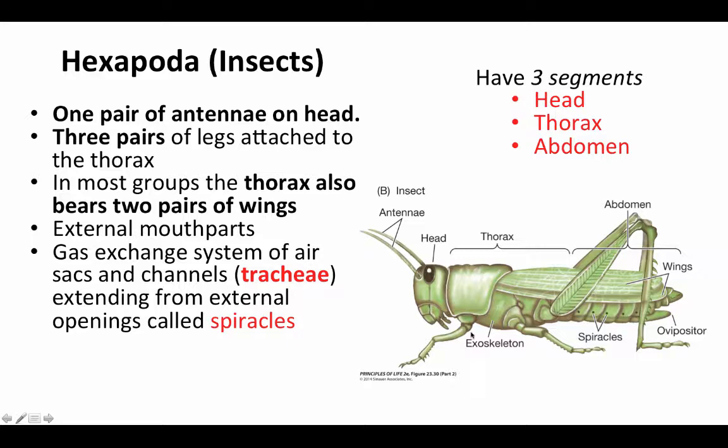The antennae are modified appendages, serially homologous with the legs. In most groups, the thorax bears two pairs of wings — this is the ancestral condition. Insects have external mouthparts, which are also highly modified serially homologous versions of these appendages. Their gas exchange happens through a system of air sacs and channels called tracheae, which extend into the body from little openings called spiracles.